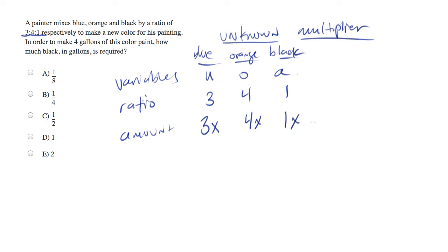Now the key to the unknown multiplier technique is that the multiplier is the same, x, in every case. And that's what allows this problem to become easier.